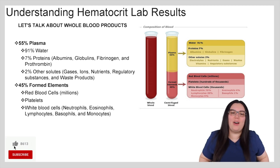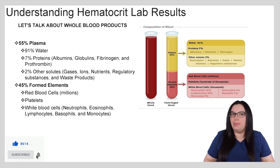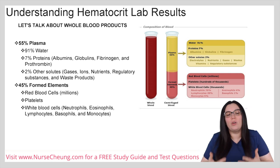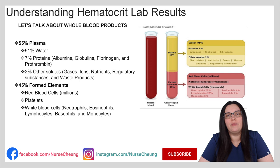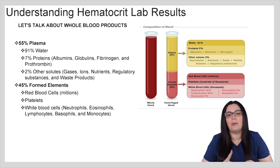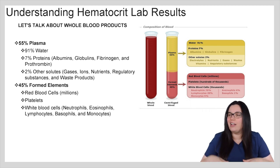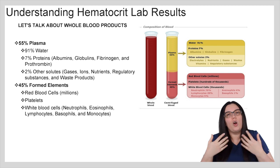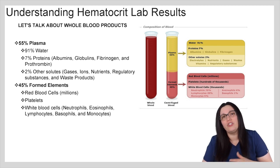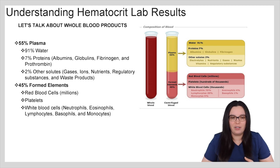To begin with, let's talk about whole blood products. When we're looking at our complete blood counts or CBCs, this is the general overview of what's in our whole blood products. Our blood is about 55% plasma and 45% formed elements. Our plasma is made up of 91% water, 7% proteins — that includes our albumins, globulins, fibrinogen, and prothrombin — and 2% other solutes: gases, ions, nutrients, regulatory substances, as well as waste products. Our formed elements are our red blood cells, which is usually in the millions, platelets, and our white blood cells, which can be further broken down into neutrophils, eosinophils, lymphocytes, basophils, and monocytes.